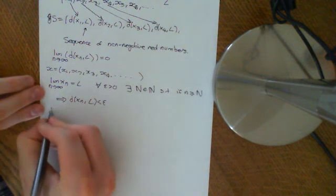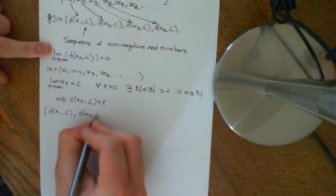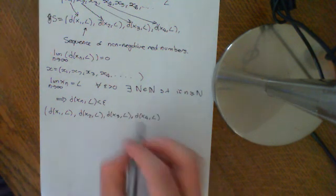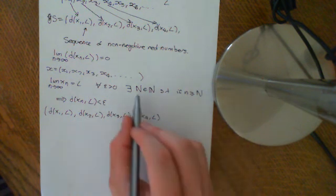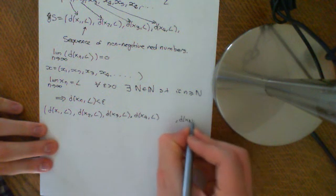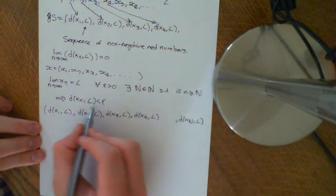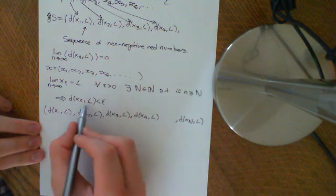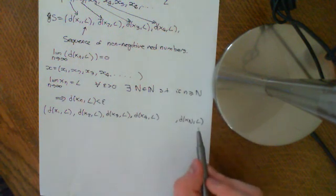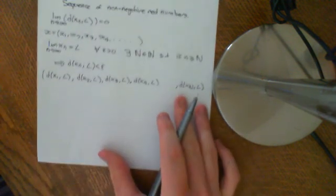Now if we look at the sequence of distances (d(x1,L), d(x2,L), d(x3,L), d(x4,L), ...) — which is our second definition's sequence — what the original definition tells us is that I can find a big N such that for that term and all terms beyond it, the distance d(x_N, L) will be less than epsilon for all little n greater than or equal to big N.